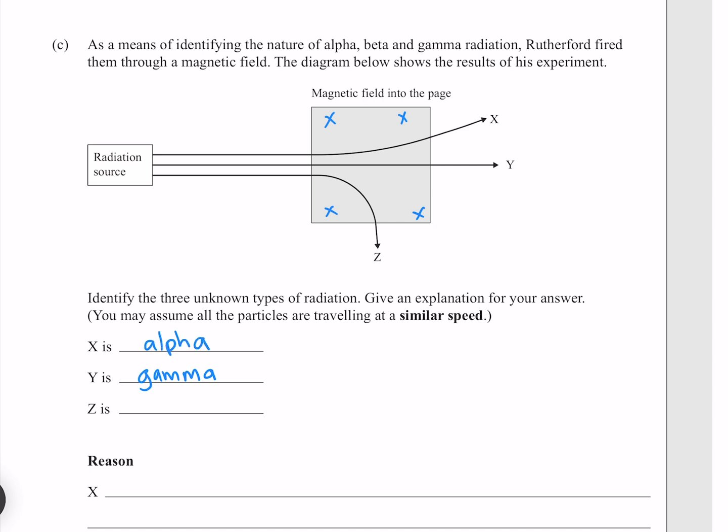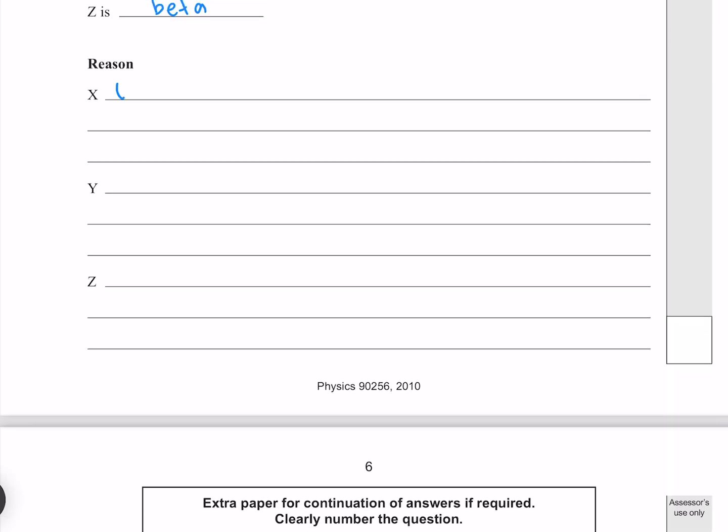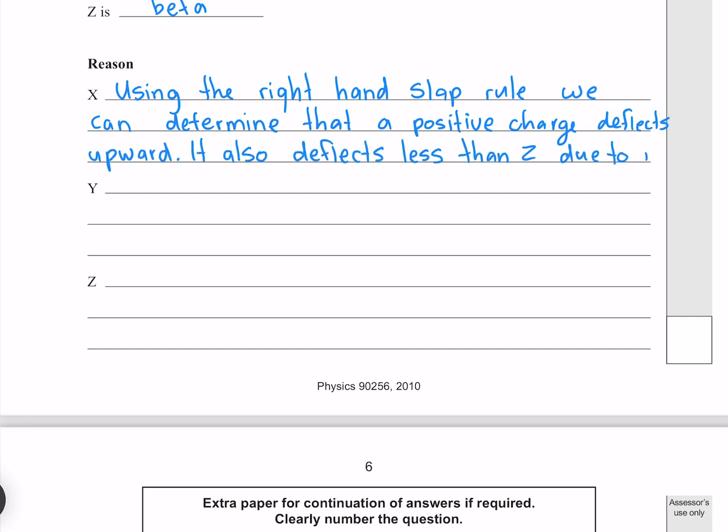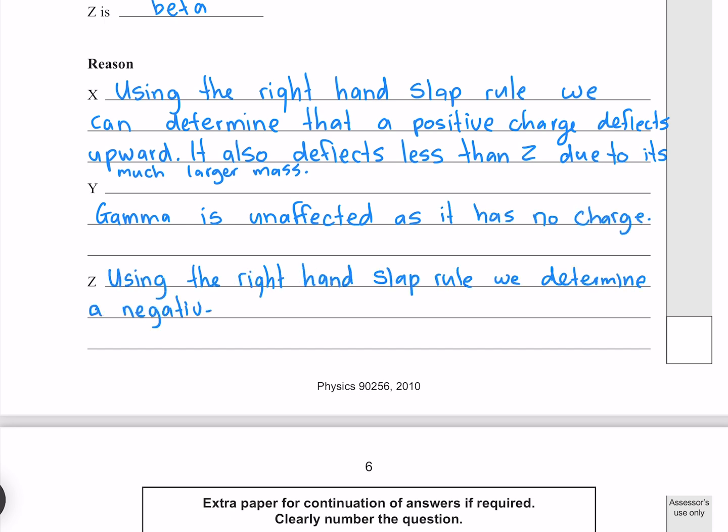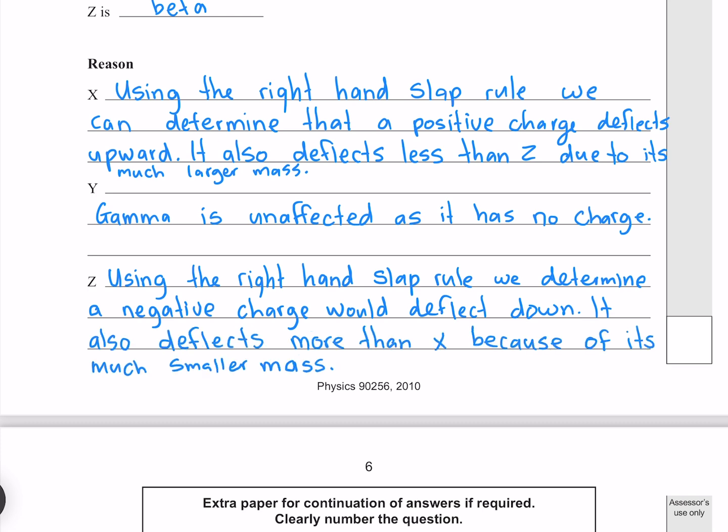Because our Z particle deflects in the opposite direction, this one must be our beta. Another means of identifying this is that our beta is deflecting at a much greater angle, which it does because it has a much smaller mass. So let's now put our reasons into words. Using the right hand slap rule, we can determine that a positive charge deflects upwards. It also deflects less than Z due to its much larger mass. Gamma is unaffected as it has no charge. Using the right hand slap rule, we determine a negative charge would deflect down. It also deflects more than X because of its much smaller mass.